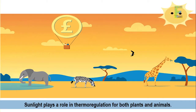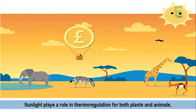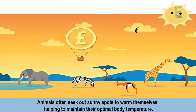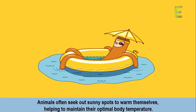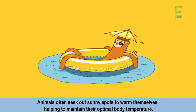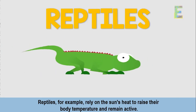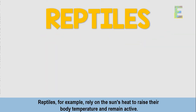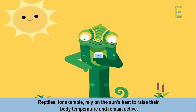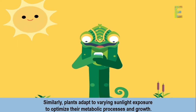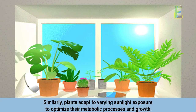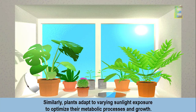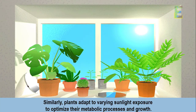Sunlight plays a role in thermoregulation for both plants and animals. Animals often seek out sunny spots to warm themselves, helping to maintain their optimal body temperature. Reptiles, for example, rely on the sun's heat to raise their body temperature and remain active. Similarly, plants adapt to varying sunlight exposure to optimize their metabolic processes and growth.